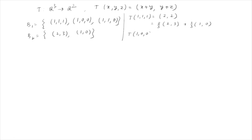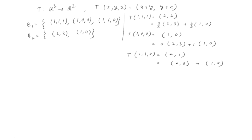T(1,0,0) = (1+0, 0+0) = (1,0) = 0·(2,3) + 1·(1,0). So the coordinates of this vector with respect to B2 are (0, 1). T(1,1,0) = (1+1, 1+0) = (2,1). Writing this as a linear combination: we need 1 from the second component, so it is (1/3)·(2,3) + (4/3)·(1,0)... the coordinates are 1/3 and 4/3.